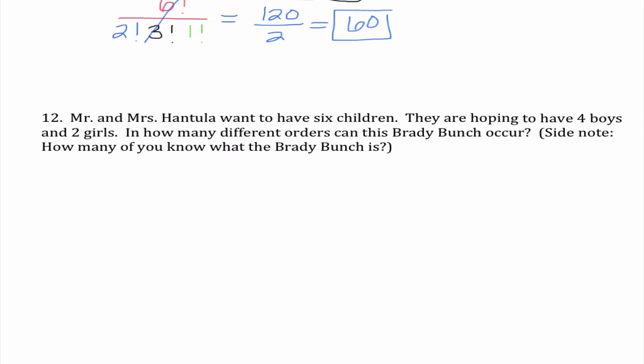Okay so the way we would go about doing this. They want to have six children. That is the total number. So that's what I'm putting in the numerator. It says they're hoping to have four boys. So I'm going to do 4 factorial in the denominator and two girls. So I have 2 factorial. So when I simplify this this would be 5 times 6. So 30 divided by 2 would give us 15. So there are 15 different orders that they could have kids. There's six children in order to have four boys and two girls.